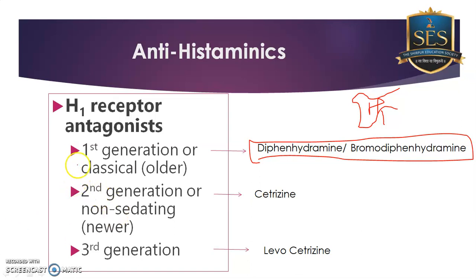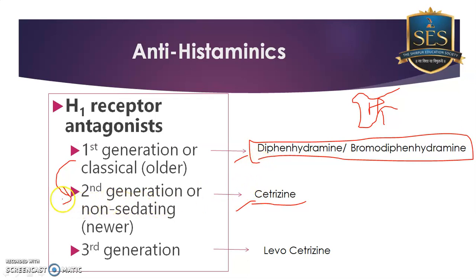Later, people did chemical modifications on first generation drugs, leading to second generation antihistamines. The main disadvantage of first generation — sedation — has been overcome by second generation. For example, cetirizine has a lower sedating effect. If you take diphenhydramine versus cetirizine, you will find that cetirizine has less sedative effect compared to diphenhydramine.